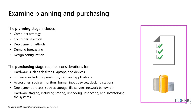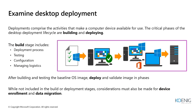For purchasing, you need to consider hardware such as desktops, laptops, or other devices; software including the operating system and applications; accessories like monitors, human input devices, and docking stations; deployment process resources like storage, file servers, and network bandwidth; and hardware staging — storing, unpacking, inspecting, and inventorying systems.